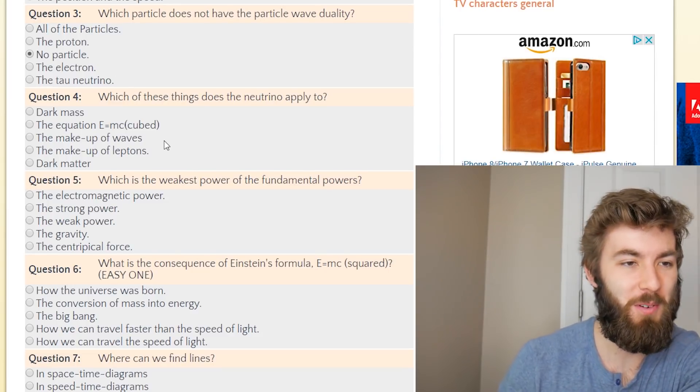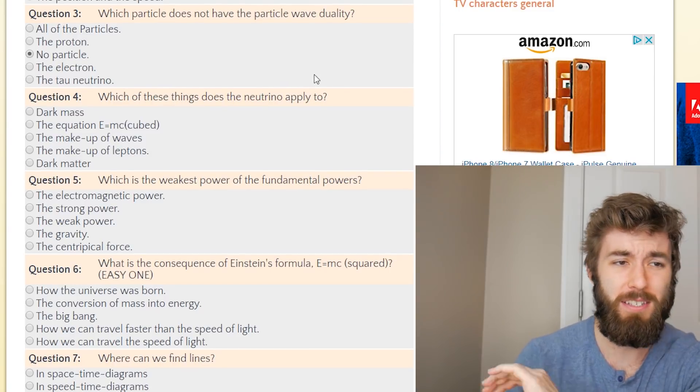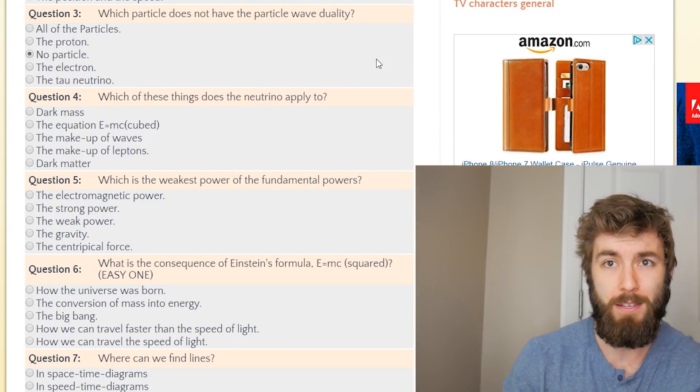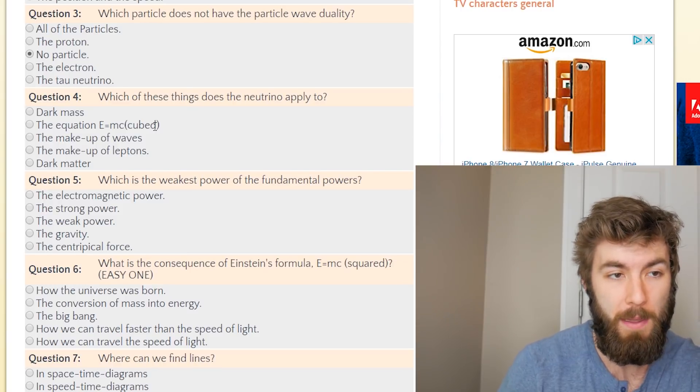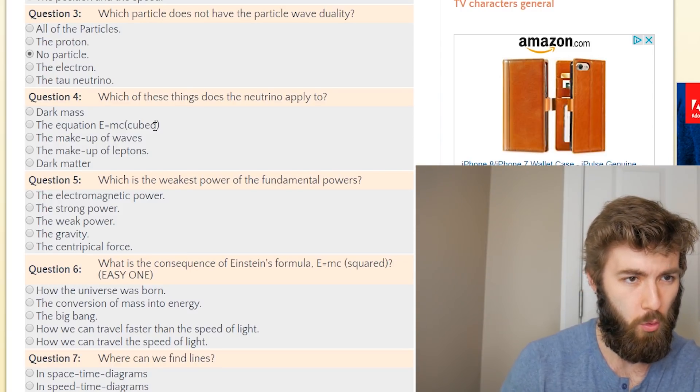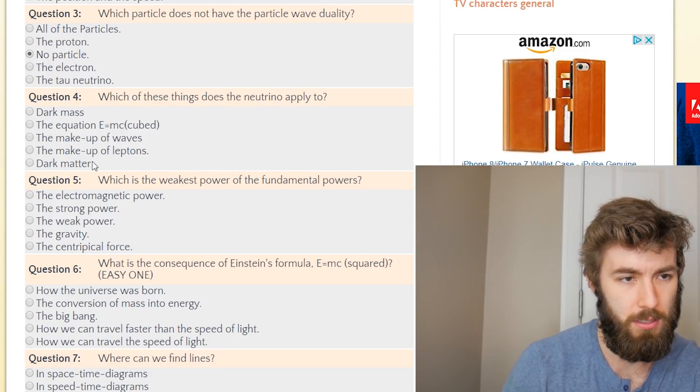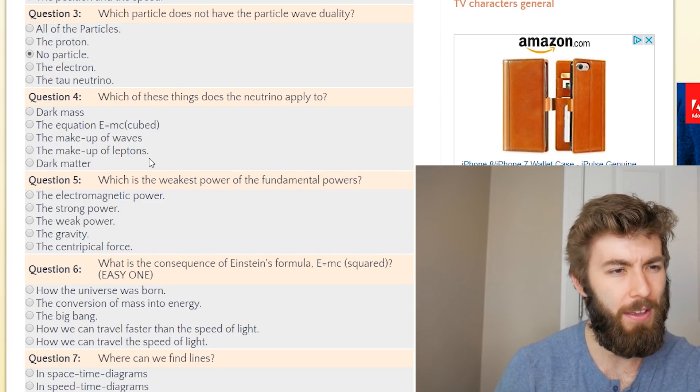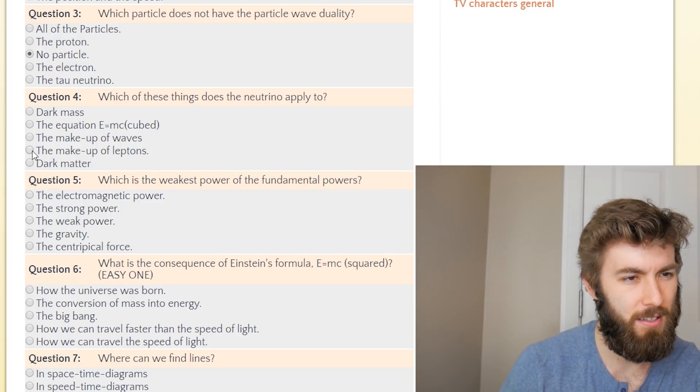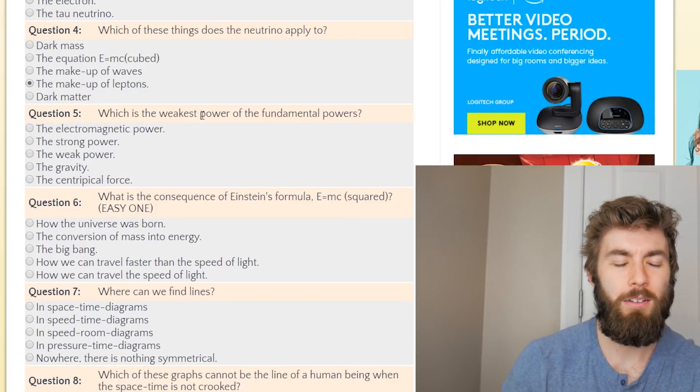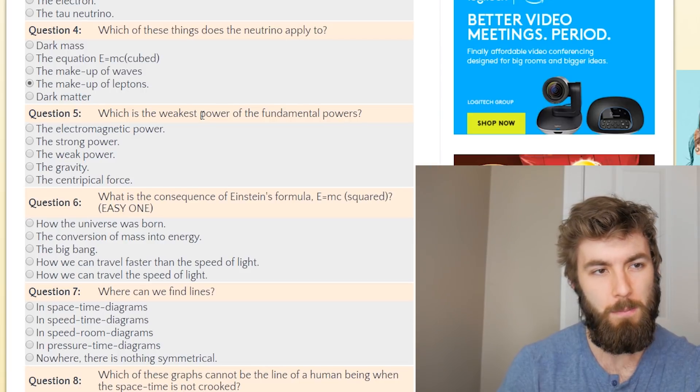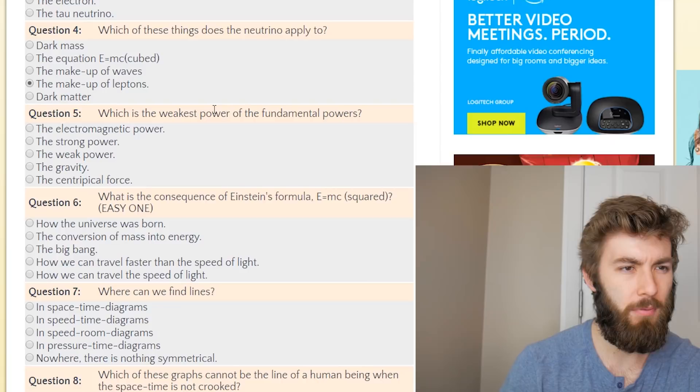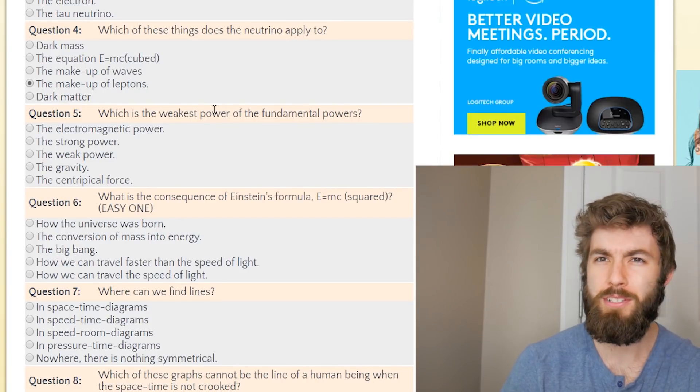Which of these things does the neutrino apply to? Dark mass. The equation E equals mc cubed, guys. We're talking about the less famous Einstein equation that doesn't make sense. The makeup of waves, the makeup of leptons, dark matter. Which of these things does the neutrino apply to? Well, the neutrino is a lepton. So it applies to the makeup of itself, I guess? The makeup of waves? I mean, I know that there's that one theory that suggests that it could be neutrinos since they're so weakly interacting, being what dark matter actually is. I don't know if that was ever, if that thought was ever closed.